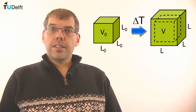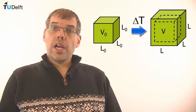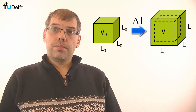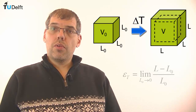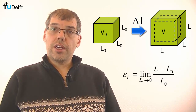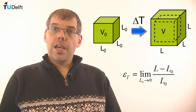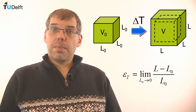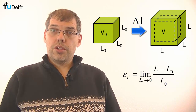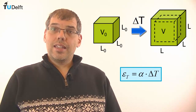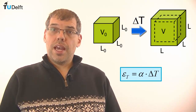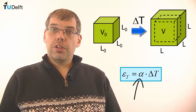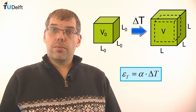Returning to our object, if it is made of a single isotropic material, the expansion will be uniform in all directions. Thus, we will have a uniform thermal strain in all directions. Generally speaking, for most engineering applications, we can consider this expansion to be linear with temperature, and we can define the linear coefficient of thermal expansion, alpha, that we multiply by the temperature change in order to obtain a thermal strain.